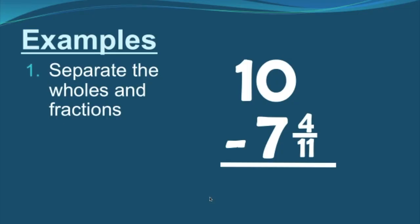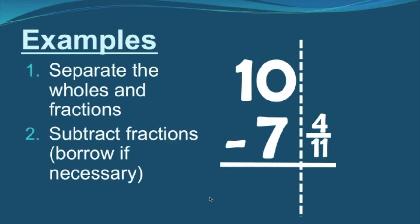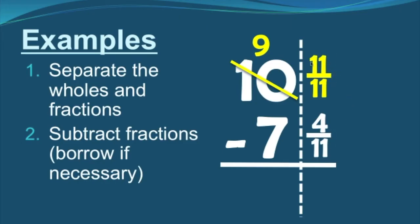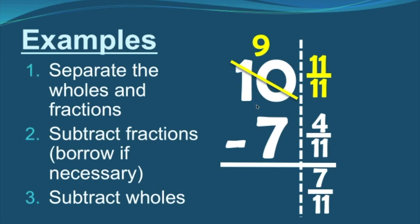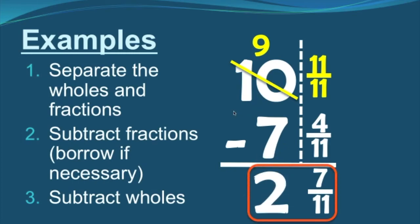Another example. Step one: separate the wholes and fractions. Step two: subtract fractions and borrow if necessary. I can't subtract four elevenths from nothing, so I take one whole from ten — that becomes nine — and bring that whole over to the fraction side. One whole equals eleven over eleven, since the denominator is eleven. If the denominator were fifteen, it would be fifteen over fifteen; if thirty-five, then thirty-five over thirty-five. That gives us seven over eleven. Step three: subtract the wholes — nine minus seven is two. My final answer is two and seven elevenths.